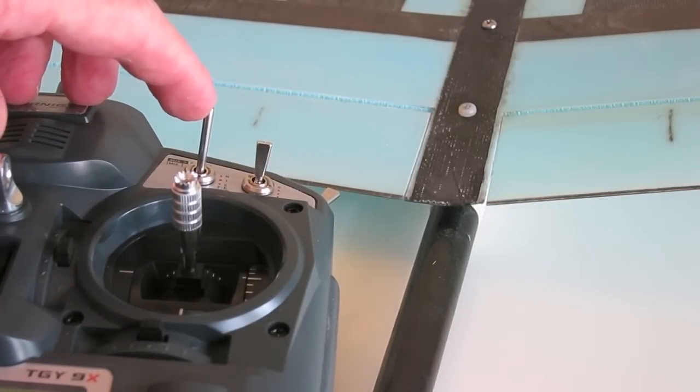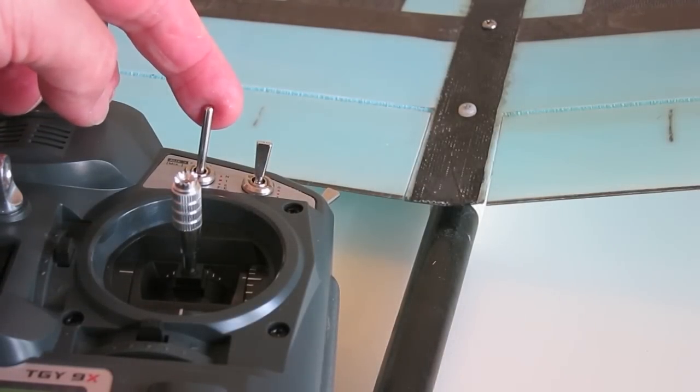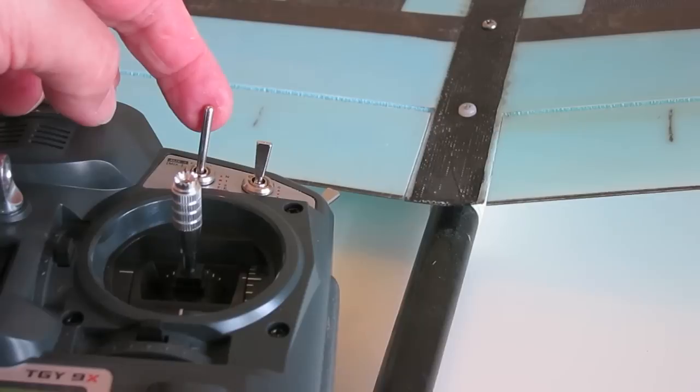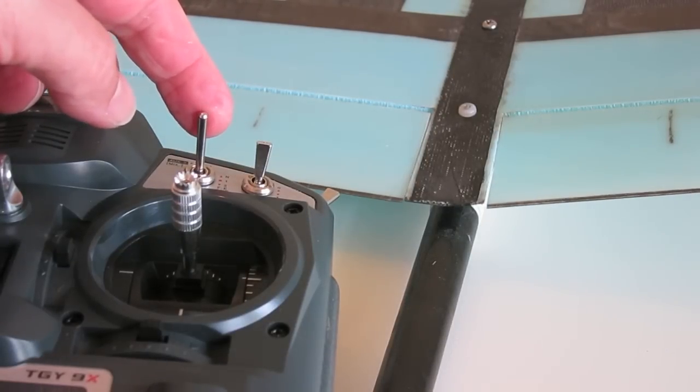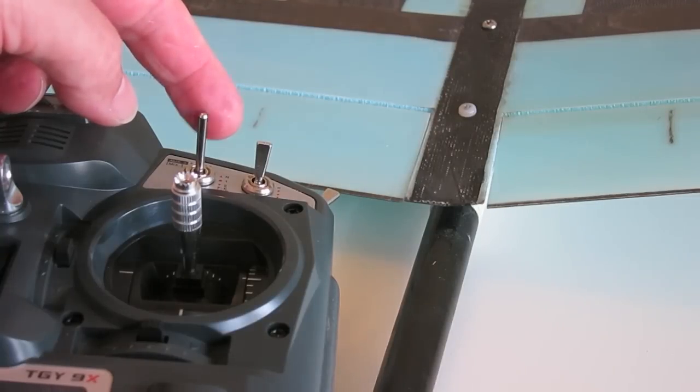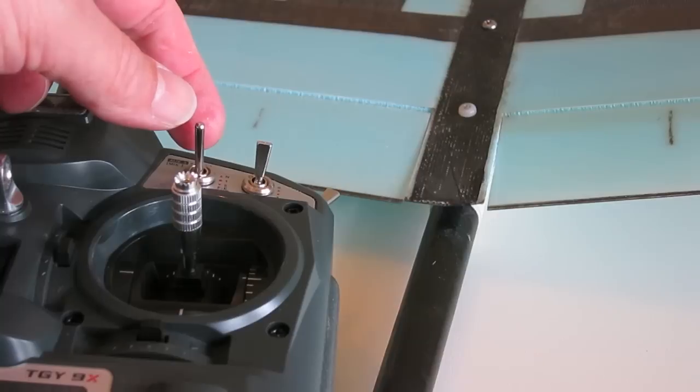And on this three-position switch I have the different flight modes, so that's speed or neutral flaperons, a couple of millimeters down flaperons for cruise mode, and a couple more millimeters down for float mode.